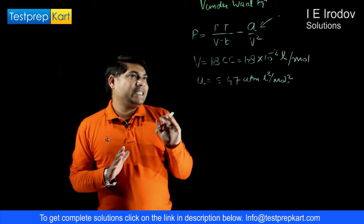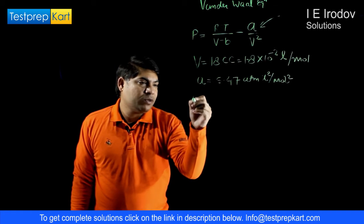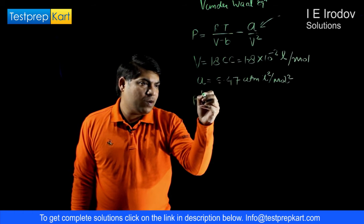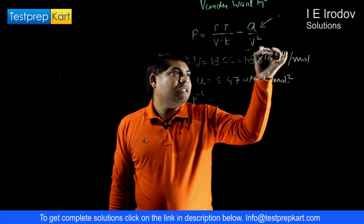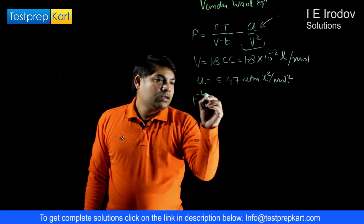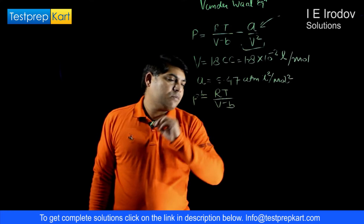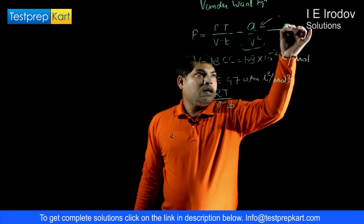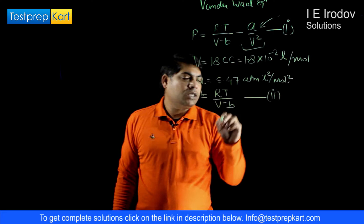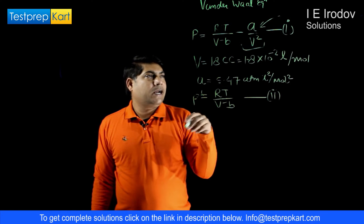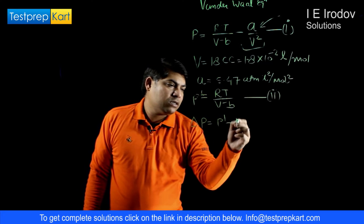If we consider that intermolecular attraction vanishes, and water is applying pressure P' on the walls, then when intermolecular attraction is removed, the a/V² term is eliminated. We can write P' equals RT over (V minus b). This is the pressure applied when intermolecular attraction is vanished, so we calculate the change in pressure as P' minus P.